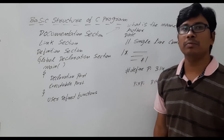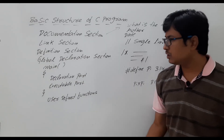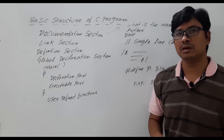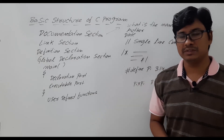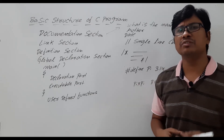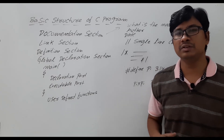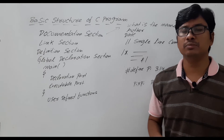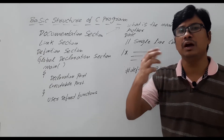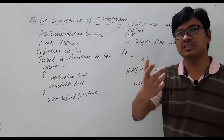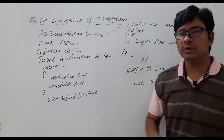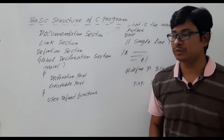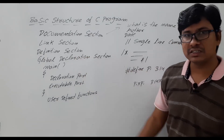Now let me discuss the global declaration section. To understand this, I need to discuss about variables. We have various types of variables: local variables, also called auto variables, register variables, static variables, and global variables which are also called external variables. Let me focus on local variables and external variables.